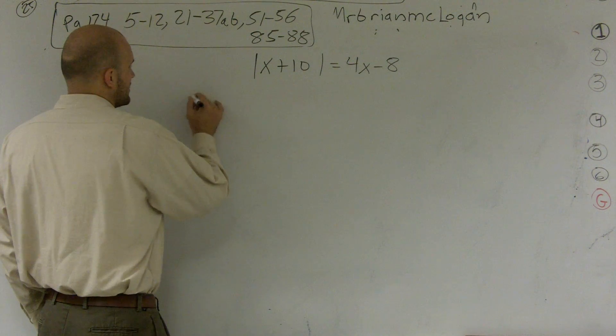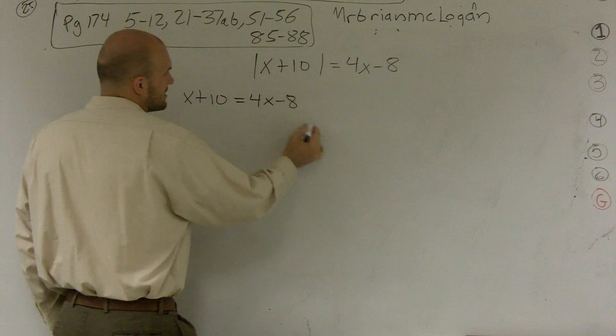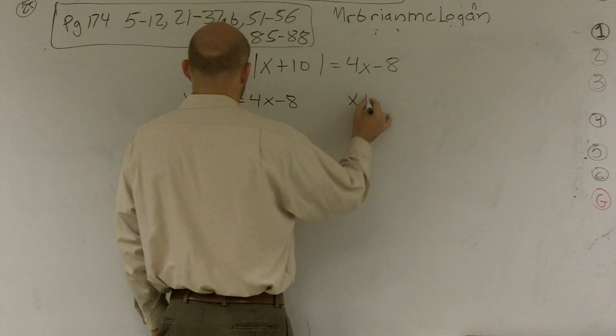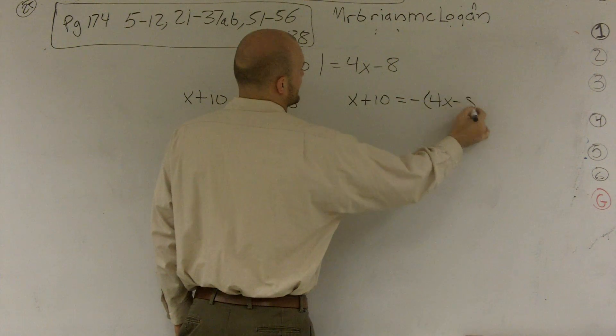And the way that we're going to do this is I'm going to write x plus 10 equals 4x minus 8. And then the negative x plus 10 equals a negative 4x minus 8.